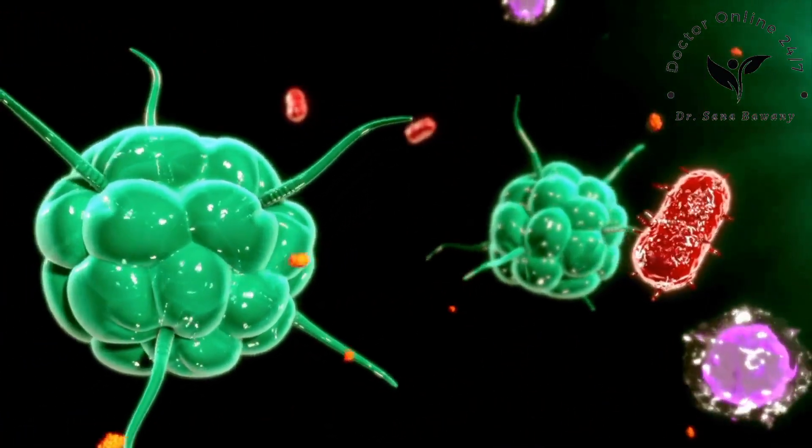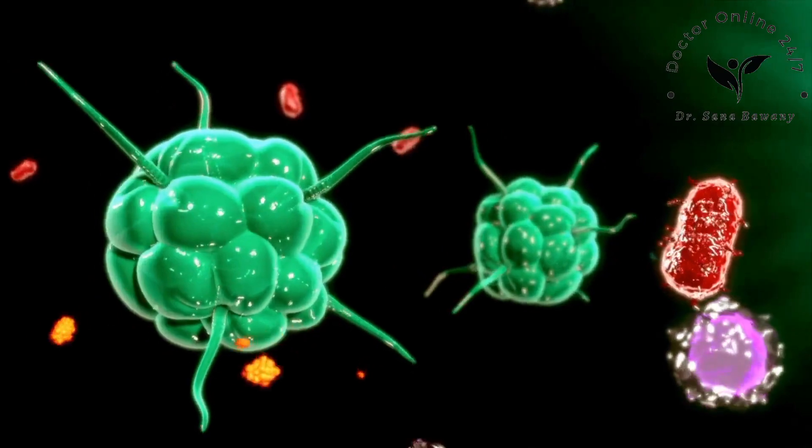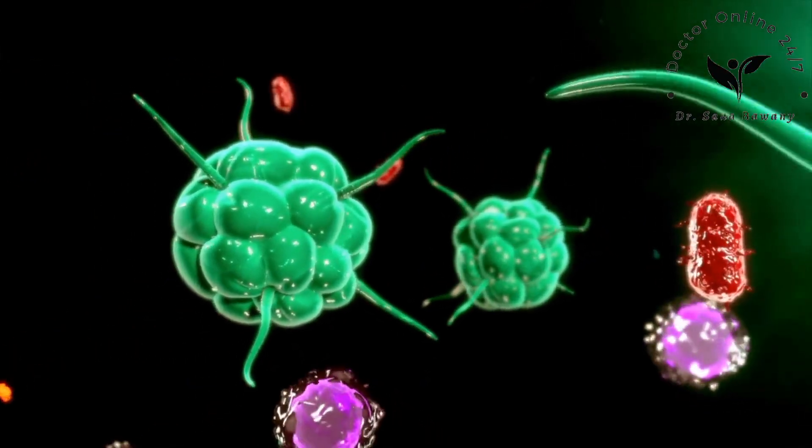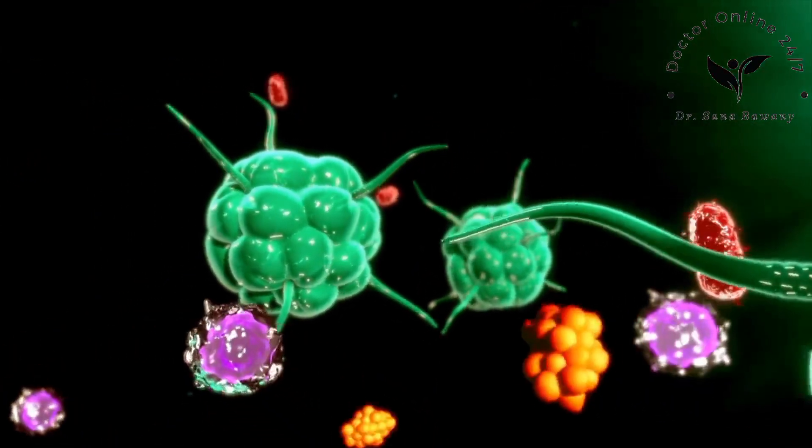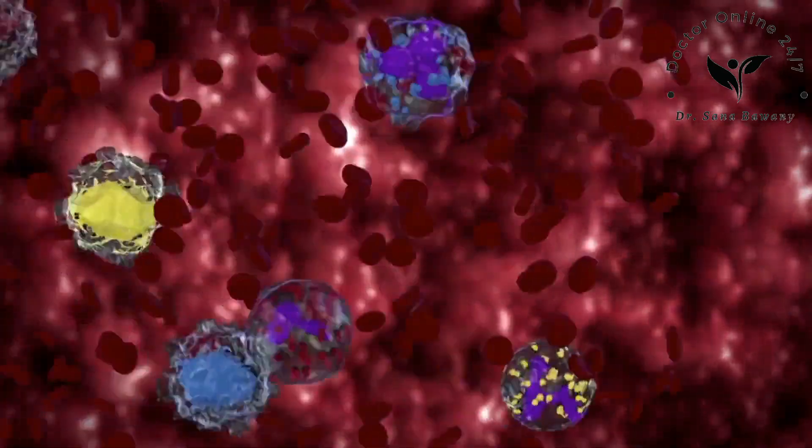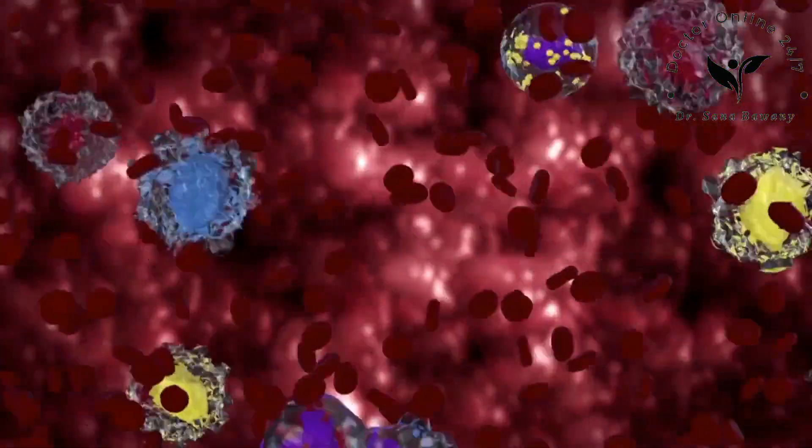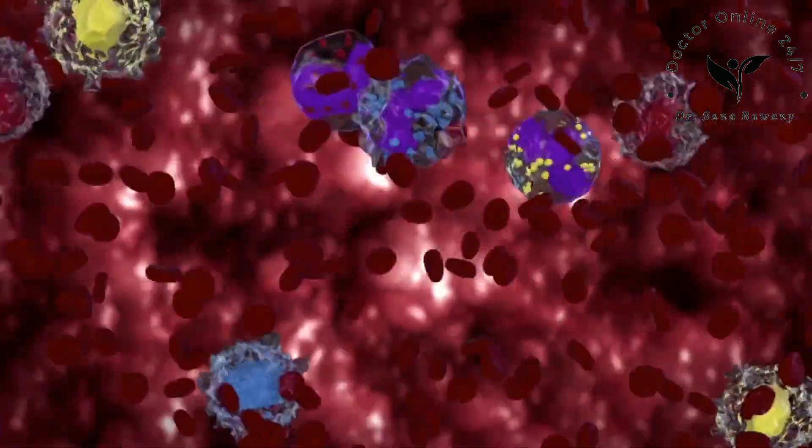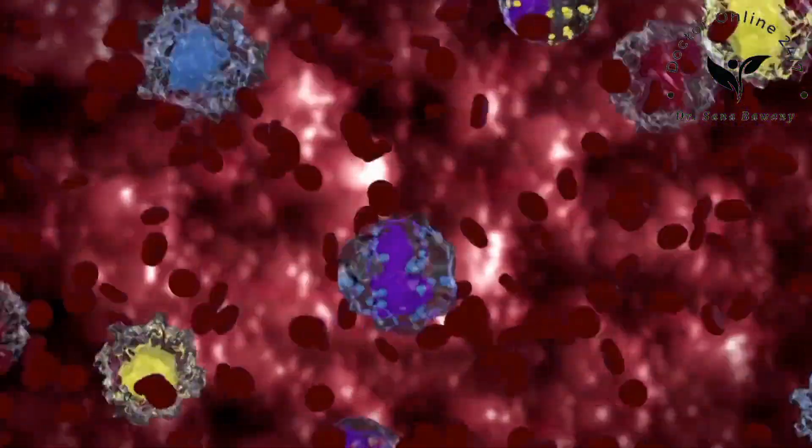But there are too many enemies, so the macrophages call for reinforcements. In your blood, hundreds of thousands of neutrophils pick up their signals and move to the battlefield. Neutrophils are intense suicide warriors that only live to kill.